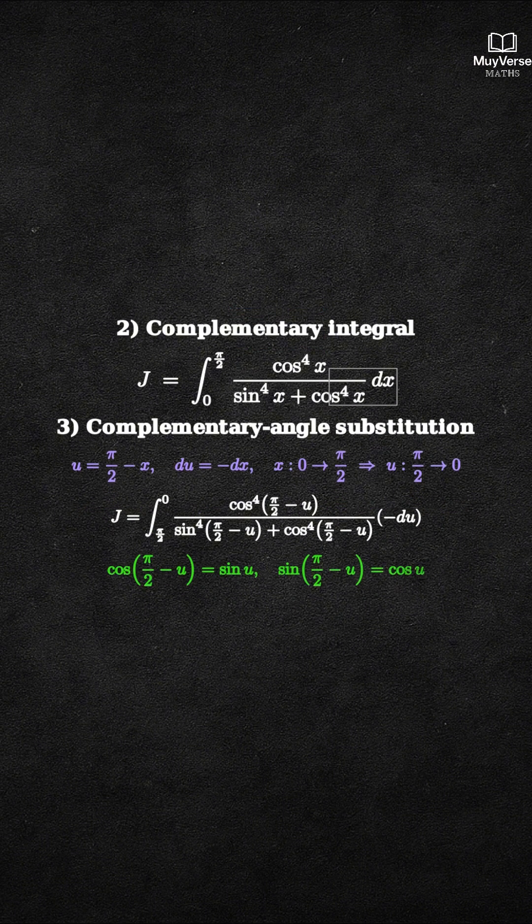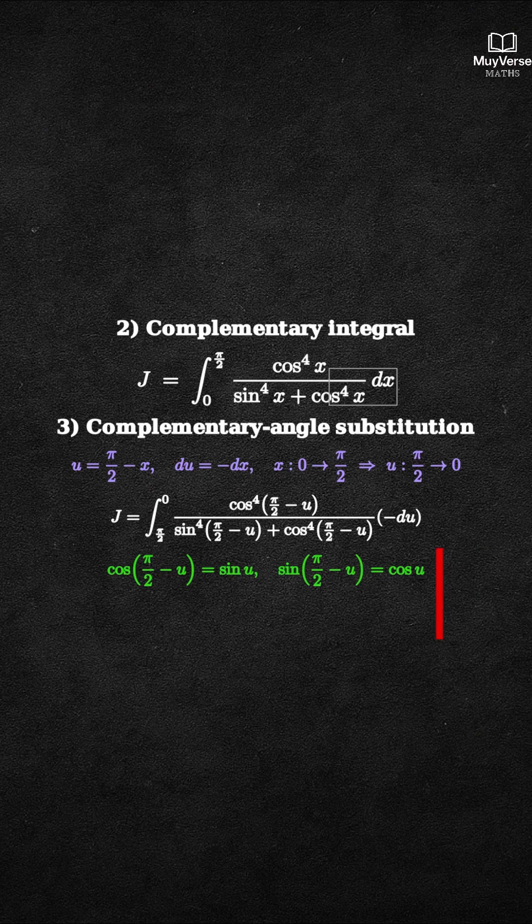Using the cofunction identities: cosine of (pi over 2 minus u) equals sine u, and sine of (pi over 2 minus u) equals cosine u.